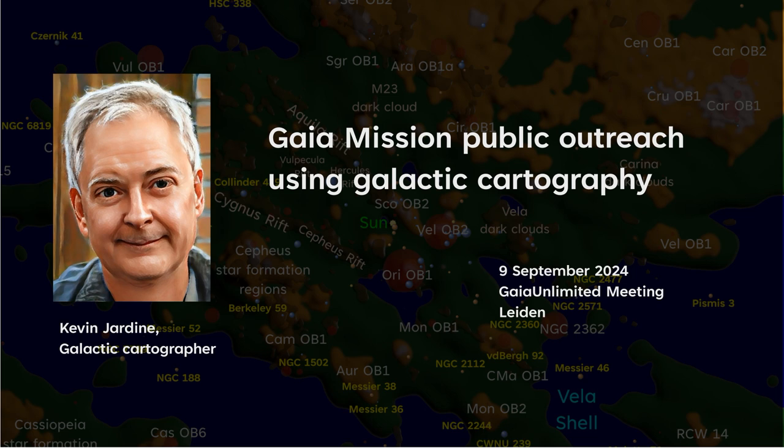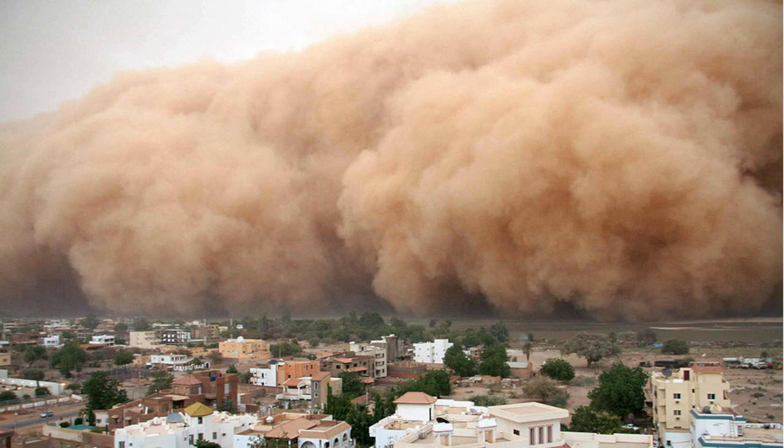This is going to be a short presentation very quickly describing how I make my maps and use them for public outreach, and I will touch briefly on Gaia Unlimited. If we just look at the raw Gaia point cloud with more than a billion points, or even a significant subset, mapping it is a bit like trying to map a sandstorm in the Sahara Desert. We need a way to extract interesting features, and one way to do this is to extract features based on the density of a selection of stars.